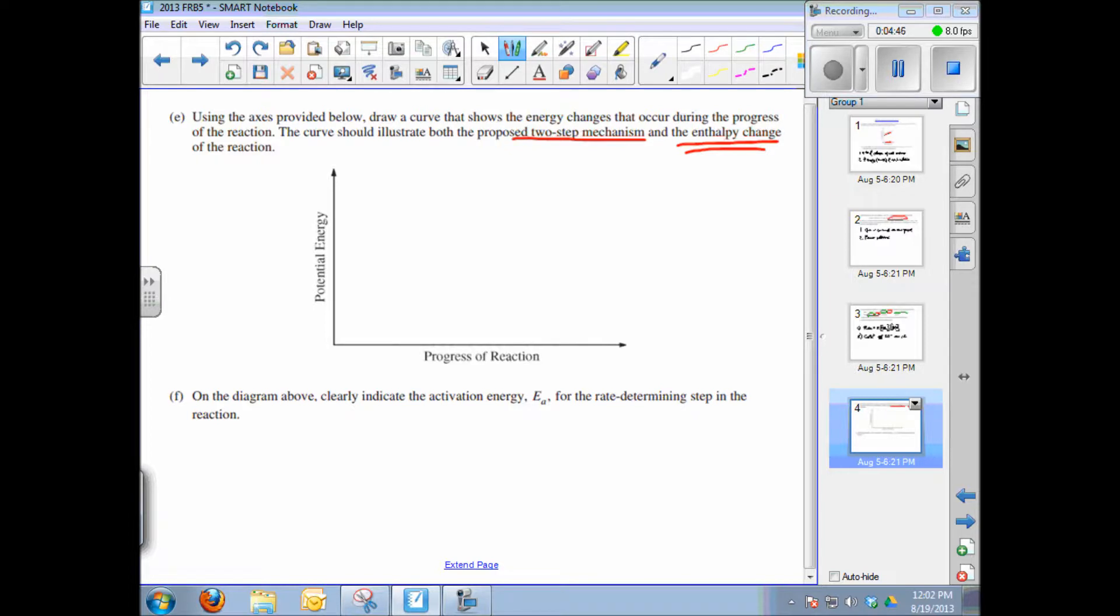First of all, let's start with the potential energy relatively high of the reactants. And we're going to have a two-step mechanism. So there's one step, there's your second step, and then the products are produced. The products are at a lower energy. So let's label this as products, this as reactants. And the next question, Part F, says on the diagram above, clearly indicate the activation energy.